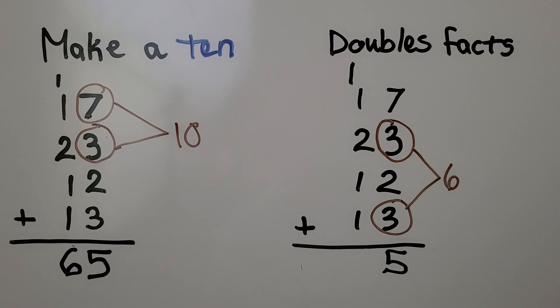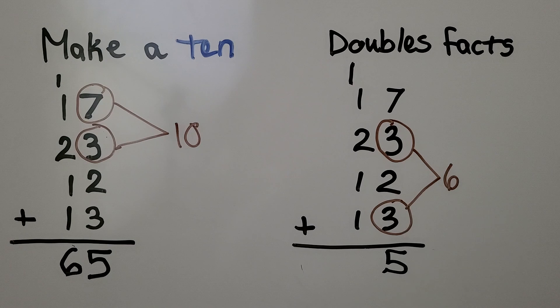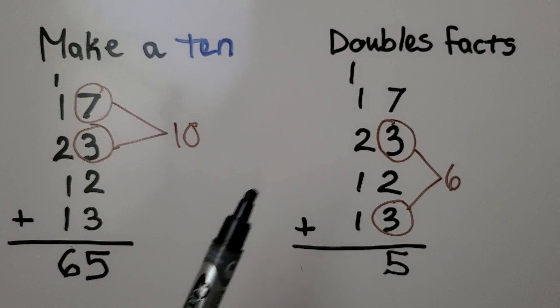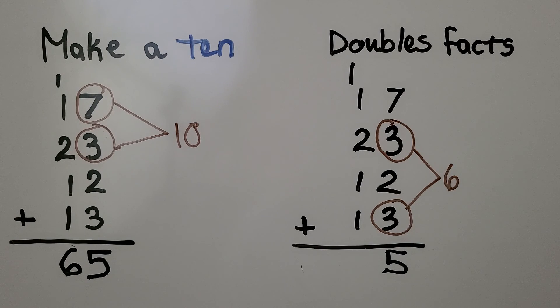15 is 1 ten and 5 ones. Now we add the tens and we've got 2, 3, 4, 5, 6. We have the same addends in these problems. They're both equal to 65. We just used different strategies to add.